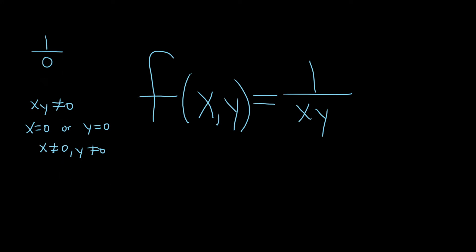To write the final answer down, we do have to use set notation. Remember, the domain is a set. So it's the set of all of the ordered pairs in the x, y plane — so (x, y) — such that x is not equal to 0 and y is not equal to 0.